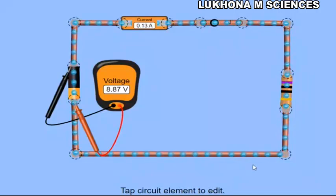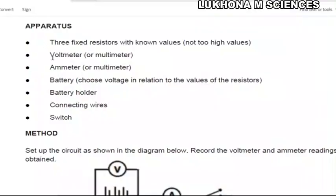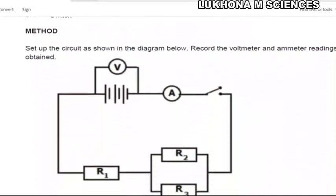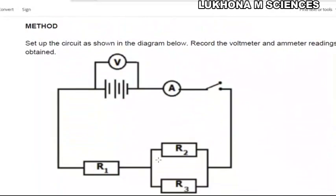Let's go to Part 2. The apparatus for Part 2 includes three fixed resistors of known value — we will use 10 ohms each — plus voltmeters, ammeters, the battery, and a switch. We are going to assemble the second diagram such that two resistors, R2 and R3, are connected in parallel with each other, and R1 is in series with that parallel combination.